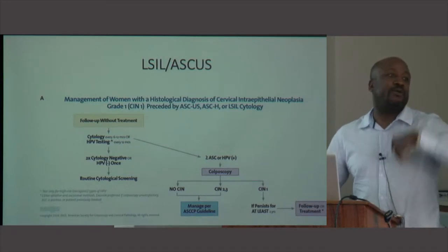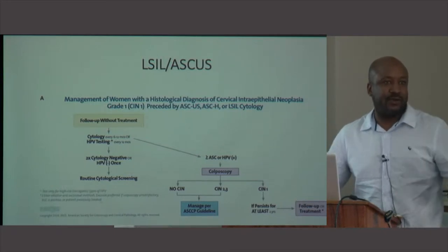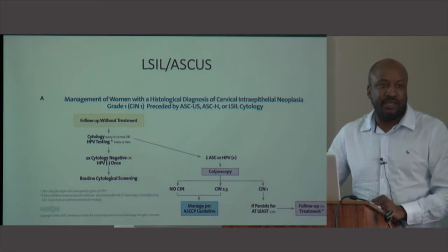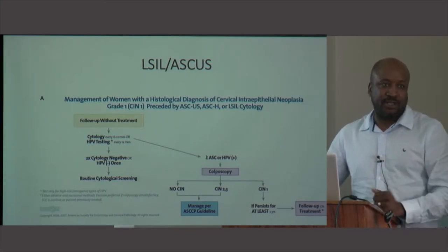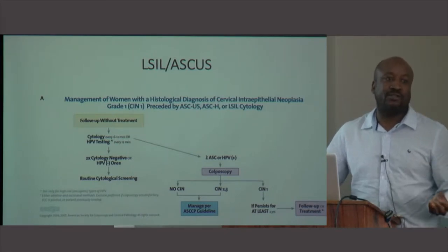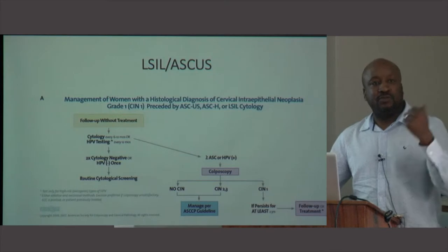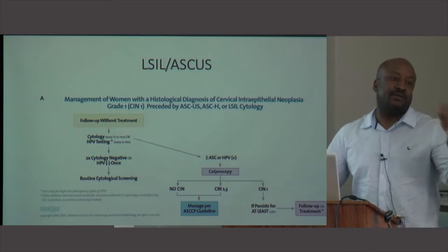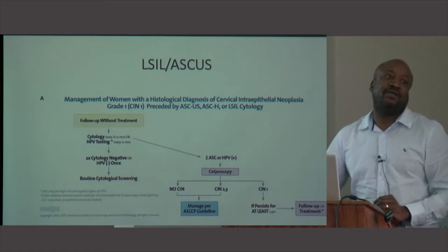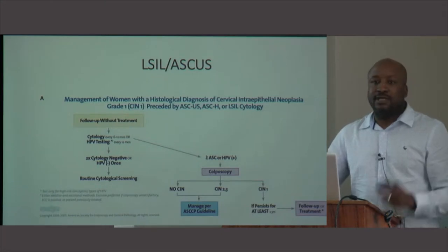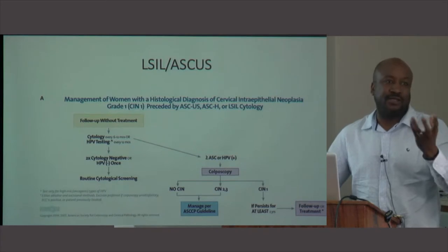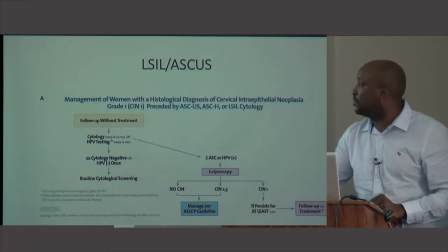It's not appropriate to repeatedly bring the patient to colposcopy, biopsy her, send her back, and keep finding CIN 1 without acting. Also, how you take that biopsy is very important. You should do multiple biopsies from the transformation zone, ideally from the endocervical zone. It doesn't help the patient if you're only taking biopsies from the ectocervix and it keeps coming back as low-grade.